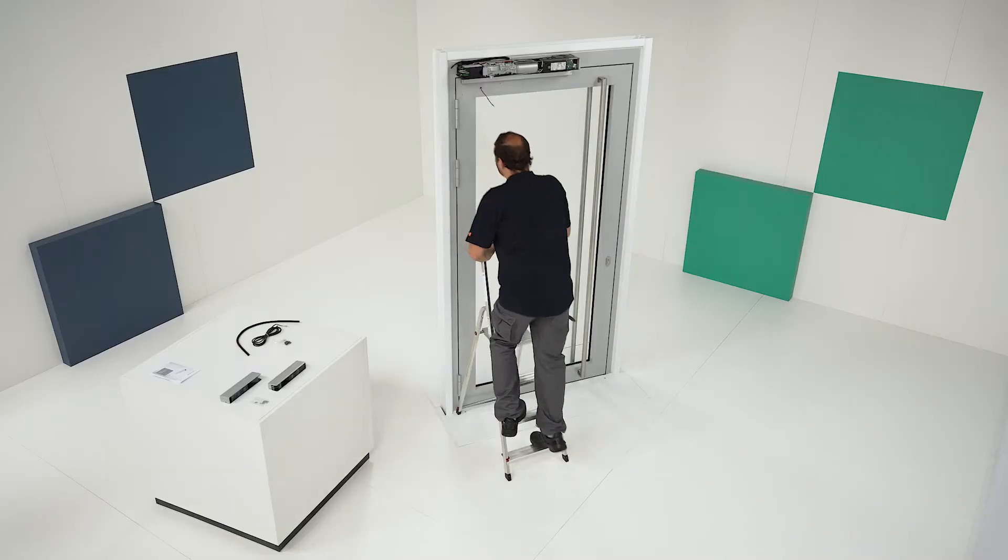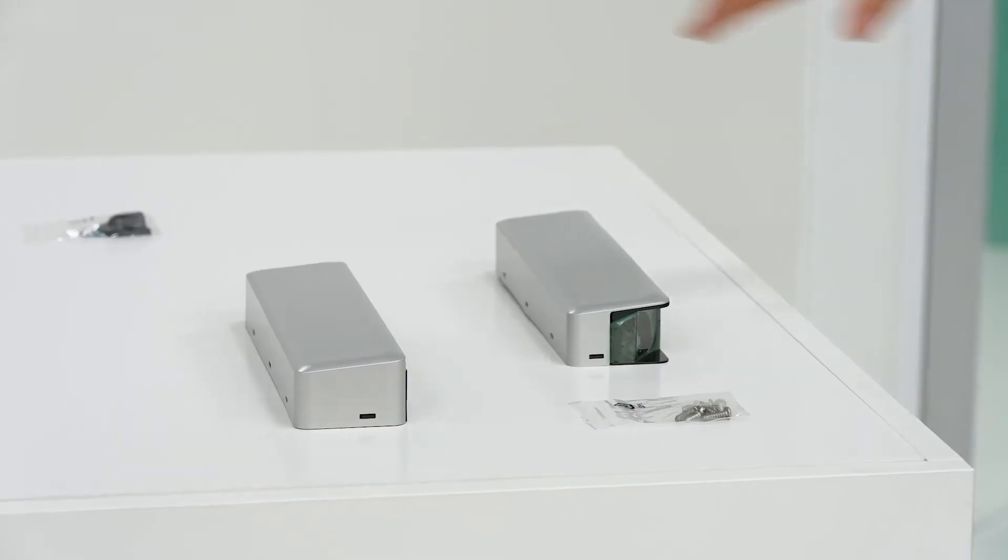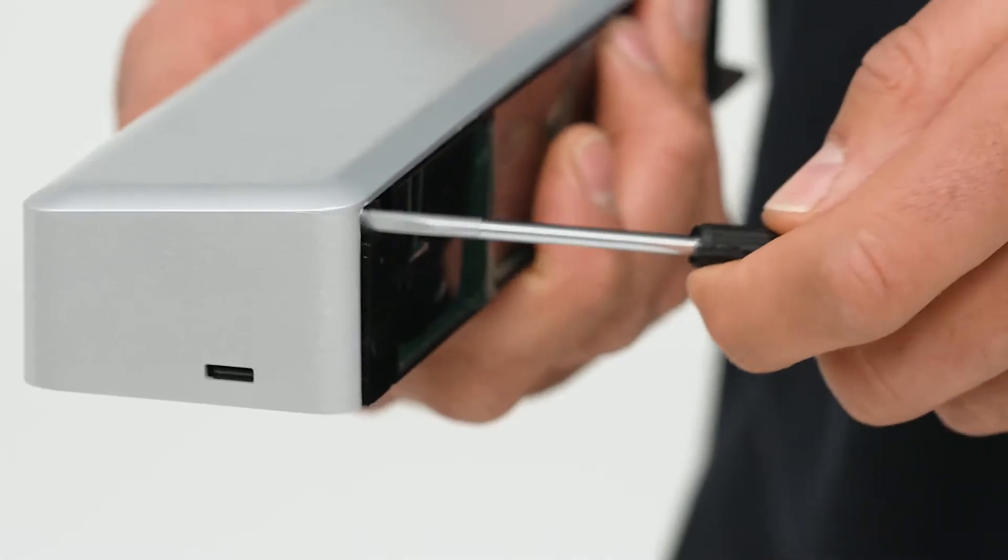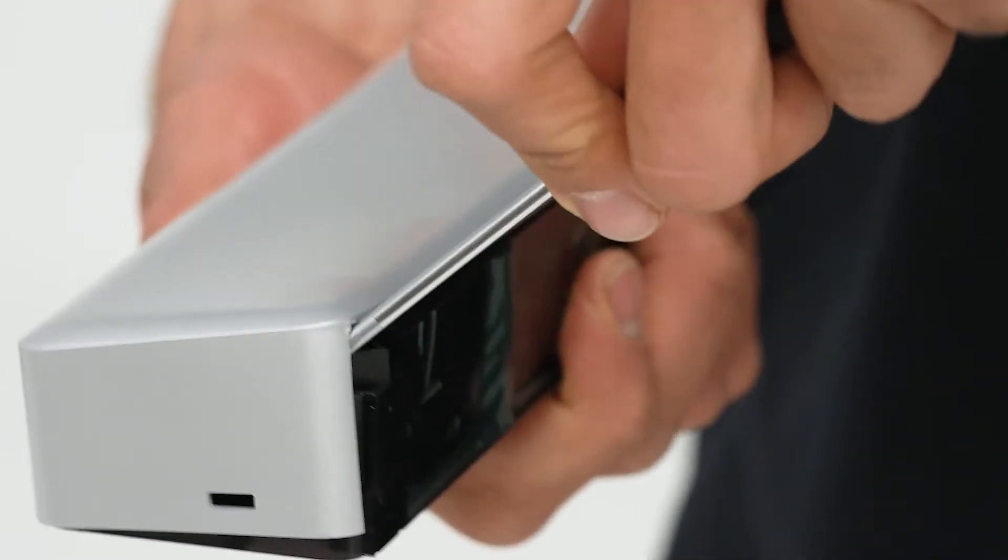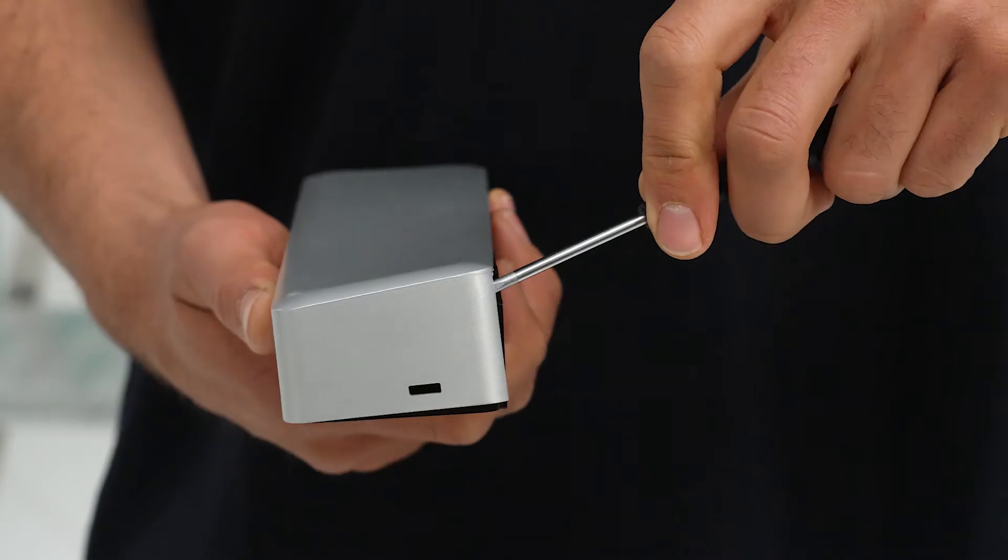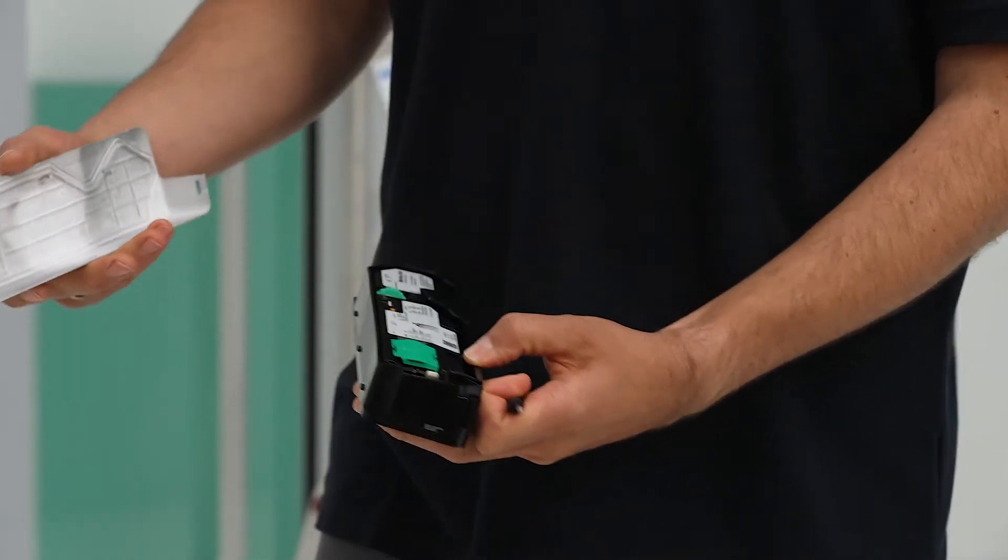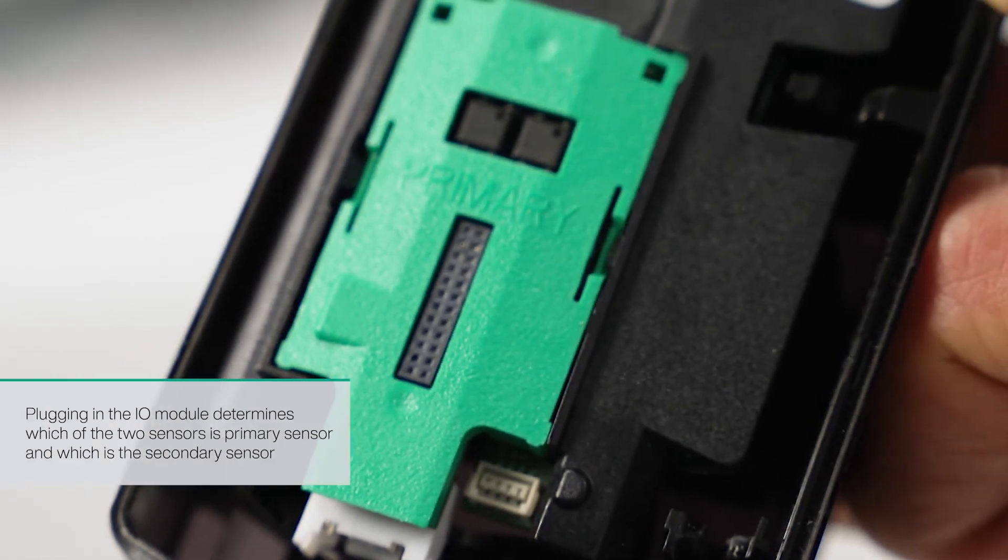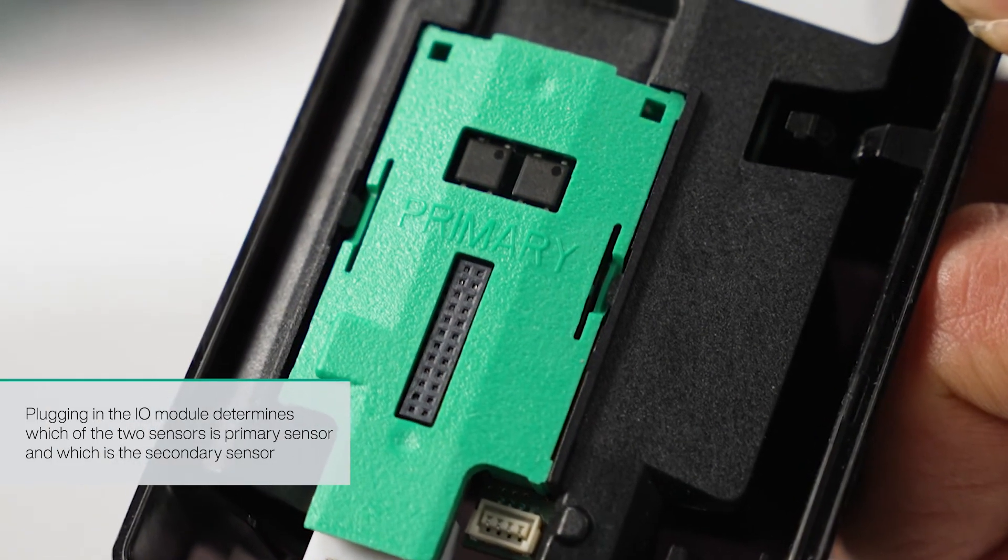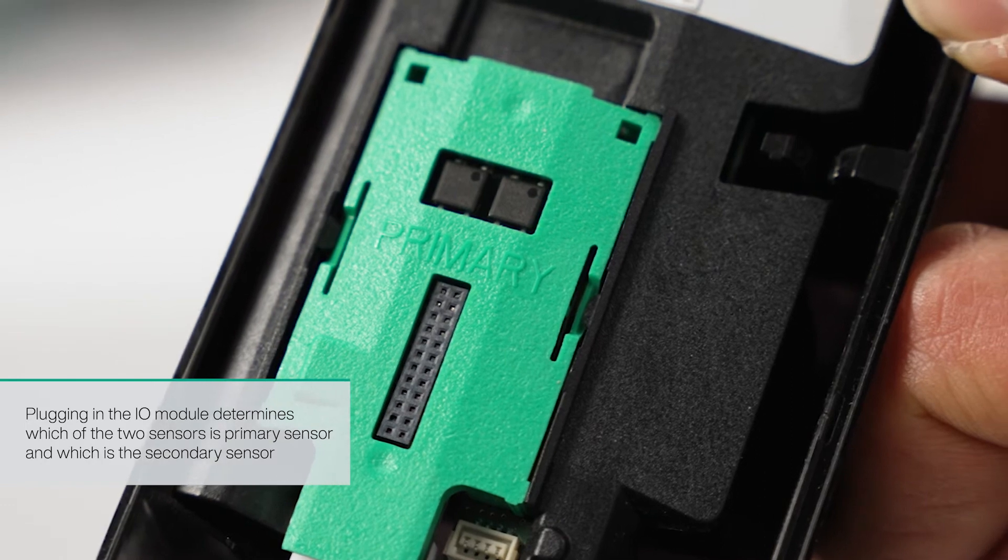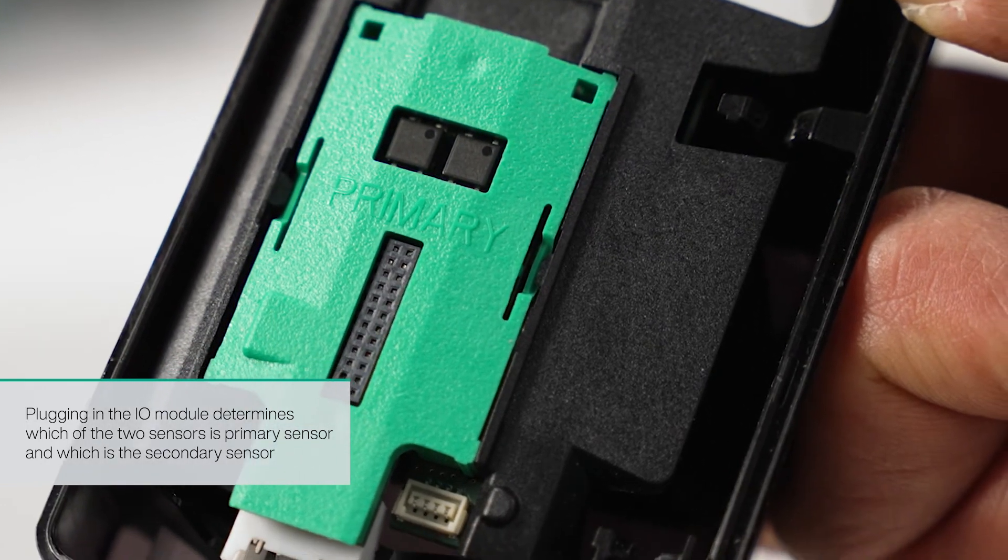Next, install the primary module on the drive side. To do this, remove the cover by inserting a screwdriver into the marked opening and pushing the side wall of the cover outward until the rear catch is released and the inside of the primary module becomes visible. The I.O. module connects to the primary sensor on the drive side. As the secondary sensor is not connected to the I.O. module, a blind cover is used here instead.